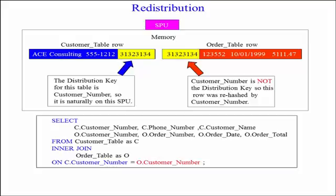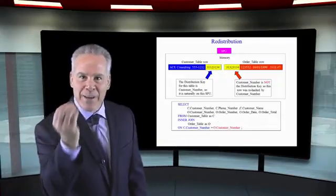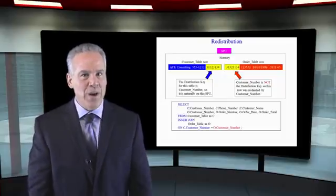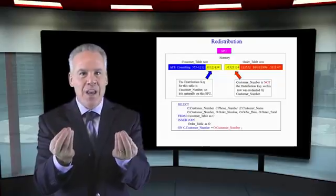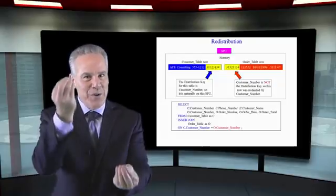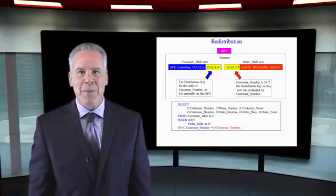If I hash the number 99 once and it goes to SPU 2, and I hash 99 again, it's going to go to SPU 2. That's how they get matching rows on the same SPU. If they don't have the same distribution key on the join column, they're going to redistribute one of those tables and then everything's going to match up perfectly.